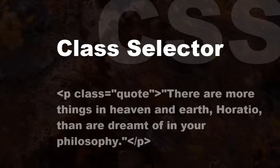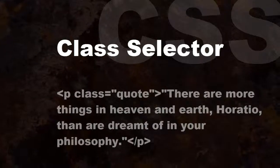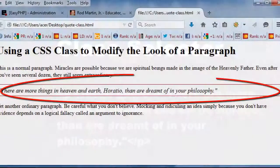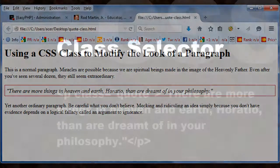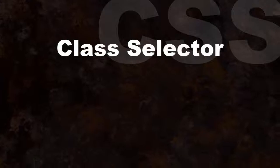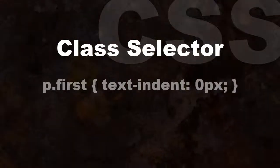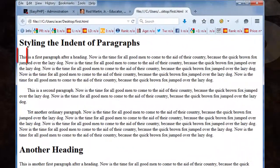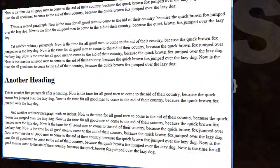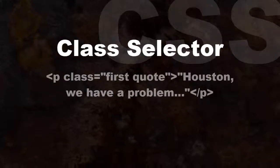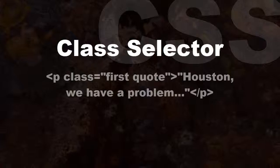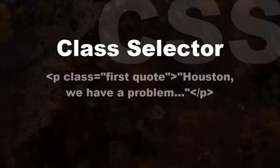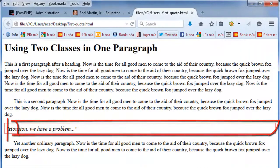The HTML which uses that class: <p class="quote">There are more things in heaven and earth, Horatio, than are dreamt of in your philosophy.</p>. A class can be restricted to only one element type — for example, p.first { text-indent: 0px; }. This is helpful if all other paragraphs have an indent, making a first paragraph after a heading flush left. We can also use more than one class at a time: <p class="first quote">"Houston, we have a problem."</p>.